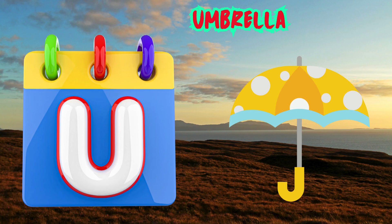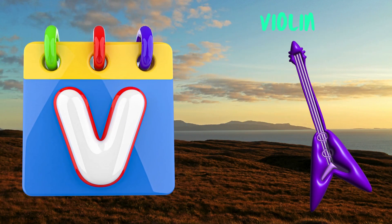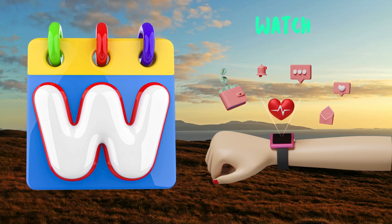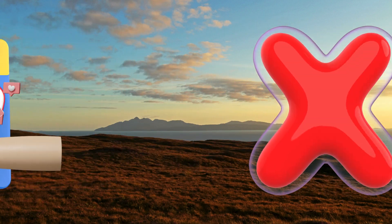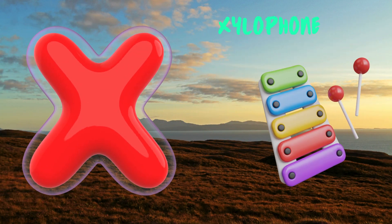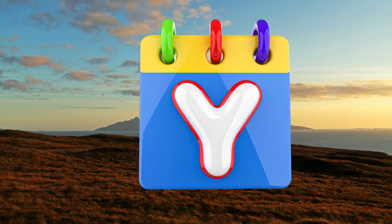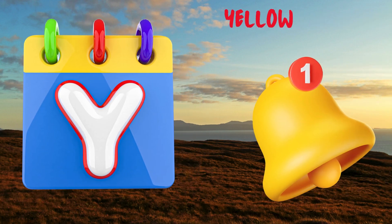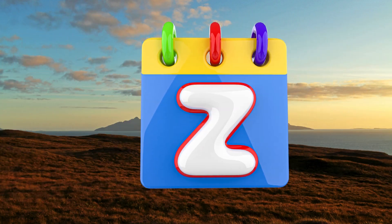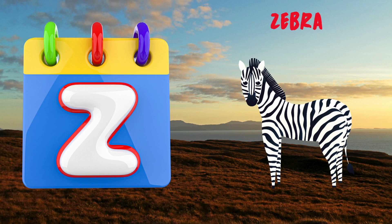U is for Umbrella. U-U-Umbrella. V is for Violin. V-V-Violin. W is for Watch. W-W-Watch. X is for Xylophone. X-X-Xylophone. Y is for Yellow. Y-Y-Yellow. Z is for Zebra. Z-Z-Zebra.